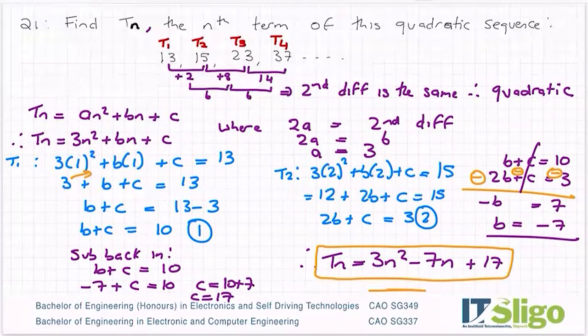So a typical question after this in an exam could be something like, what's the 50th term? So if you were asked for the 50th term, you just let n equal to 50 all the way across, and you could find the 50th term.